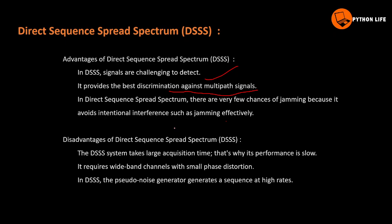The disadvantage of DSSS is that DC systems take a large acquisition time, which is why performance is slow. Time and processing overhead increase. DSSS also has wideband channels with small phase distortion. The pseudo-noise generator generates a sequence of high rates for the spreading process.